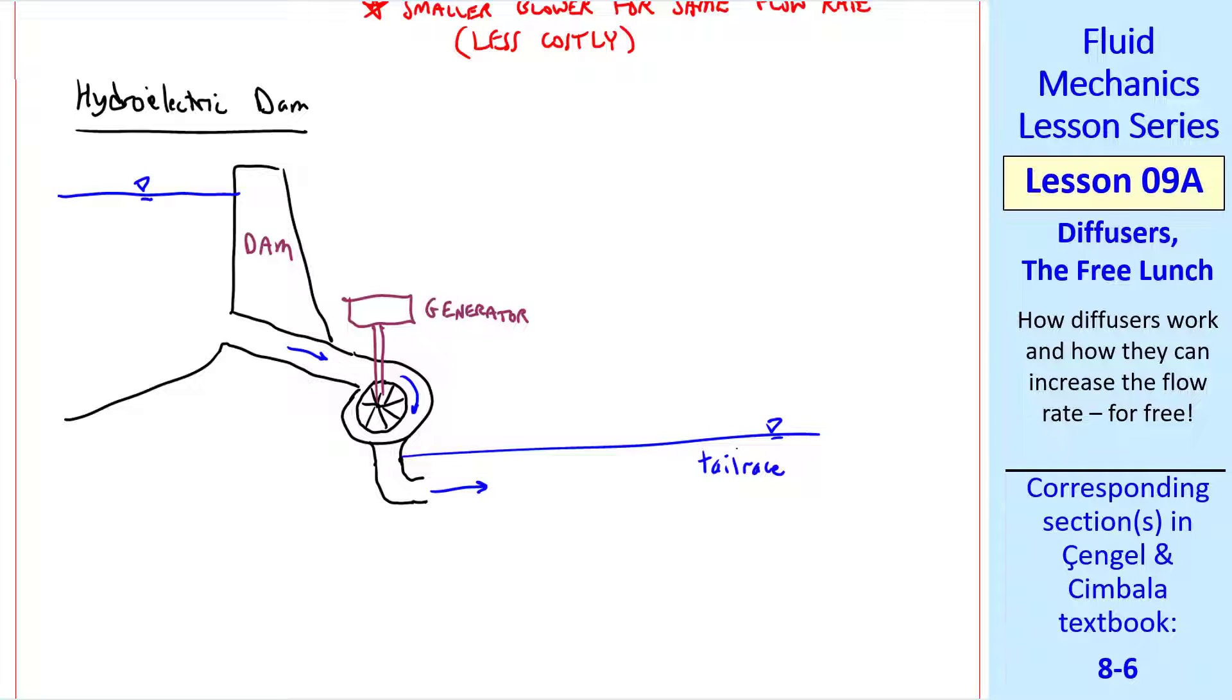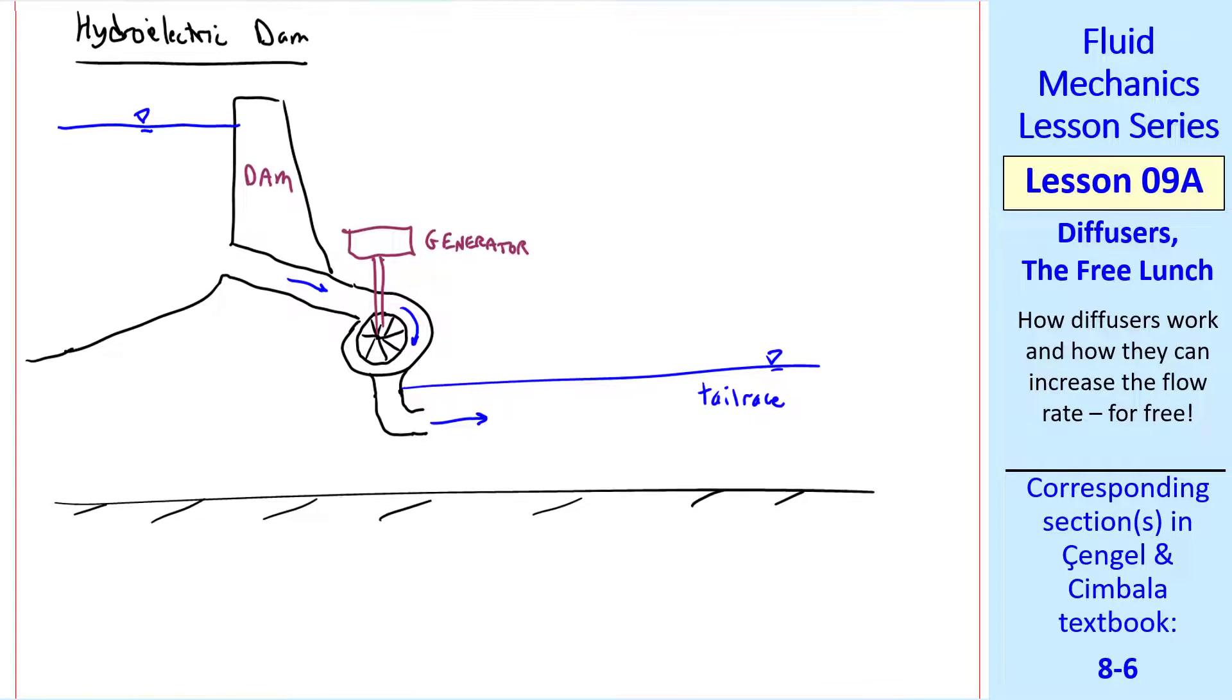Well the same situation applies here as we've been talking about. If we let the flow come out as shown you'll waste a lot of kinetic energy. And the pressure here will be the same as the pressure of the water at the exit. So adding a diffuser will help.